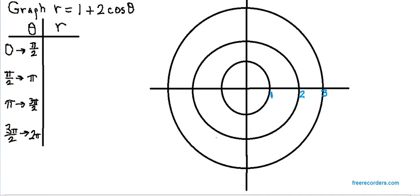We are being asked to graph r equals 1 plus 2 cosine of theta. So we're going to start by making our table and graphing it quadrant by quadrant.